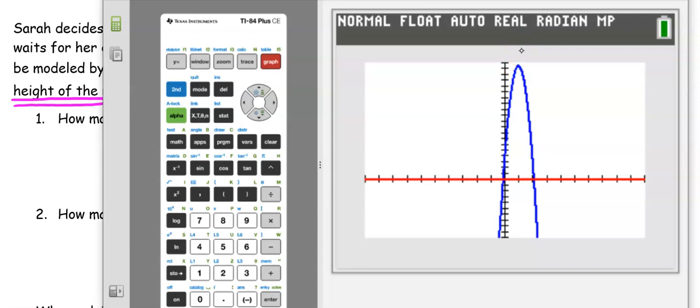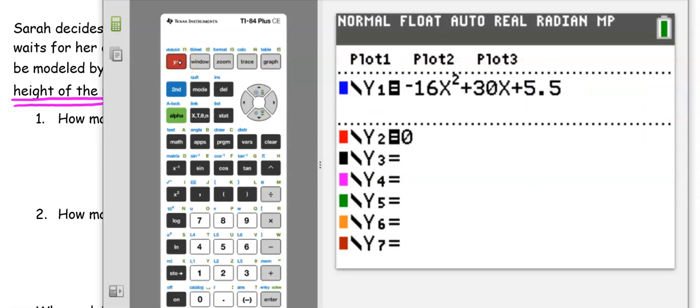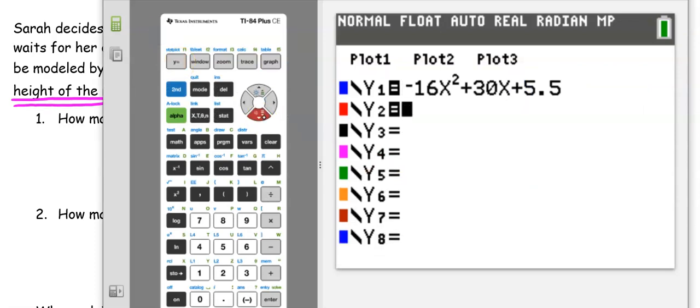So as I look at this parabola, our first question is how many chances does Sarah have to catch the rope? Explain. Well right now all I have is this parabola and I have no idea how many chances she has to catch the rope. This is where the height of Sarah is going to come into play. Because remember her dad is down here and he's throwing the rope up to Sarah. So we need to include Sarah's height on this.